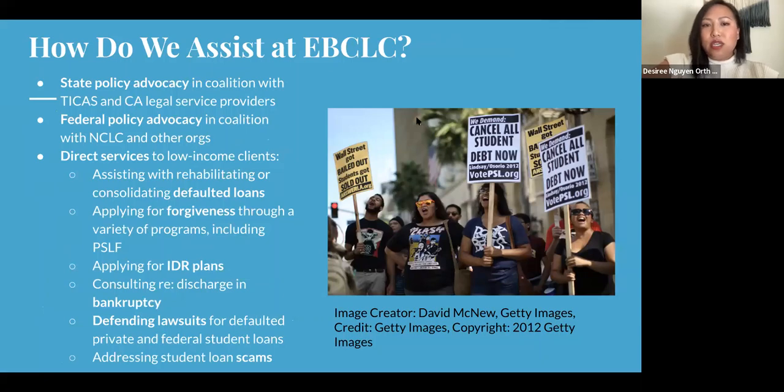How do we assist at EBCLC? We take a multi-pronged approach. We work on state policy advocacy in coalition with TICAS, which is the Institute for College Access and Success, and California legal service providers. We work on federal policy advocacy in coalition with NCLC, the National Consumer Law Center, and other organizations. And we provide direct services to low-income clients through assisting them with rehabilitation or consolidating defaulted loans, applying for forgiveness through a variety of programs, including public service loan forgiveness, applying for income-driven repayment plans, consulting about bankruptcy, defending lawsuits for defaulted private and federal student loans, and addressing student loan scams.